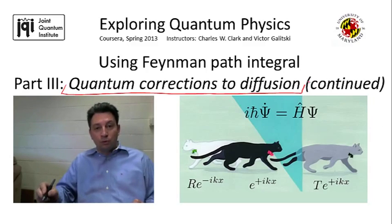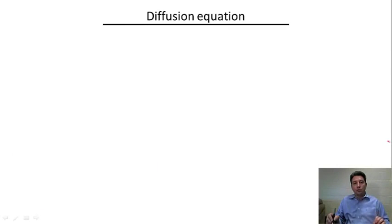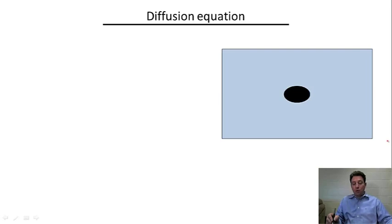Quantum Corrections to Diffusion. But before going back to these Quantum Corrections that we already mentioned in the previous video, let me remind you what classical diffusion actually is. Actually the phenomenon of diffusion you can observe at home by performing a rather simple experiment if you put a droplet of a dye in water and watch it spread out with time.